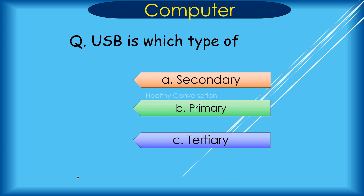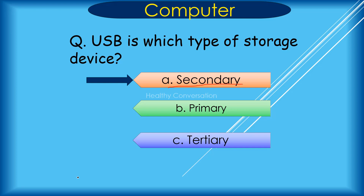Question: USB is which type of storage device? A. Secondary, B. Primary, C. Tertiary. Correct answer is A. Secondary.